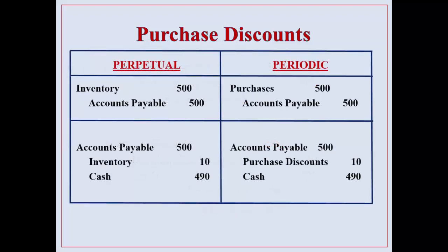With a perpetual system of course you use inventory. With a periodic system you use the account purchases and purchase discounts.